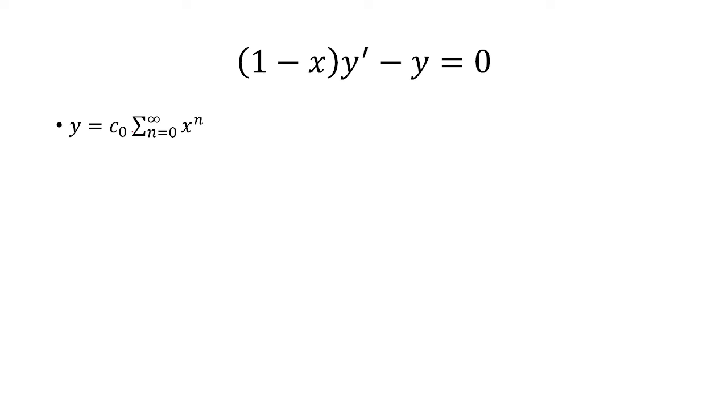And so we know that the general solution is going to be y = c_0 times the sum of x^n. So then the first 8 terms will just be c_0 + c_0x, etc., x^2 all the way up to x^8. And that's our answer.